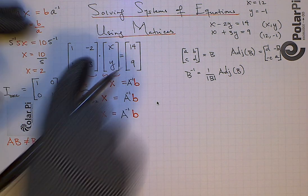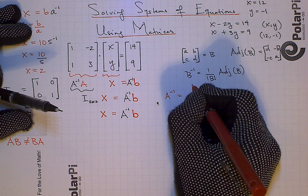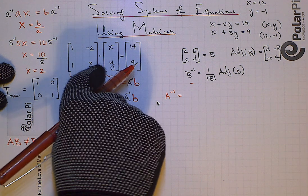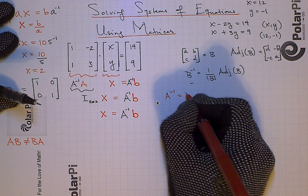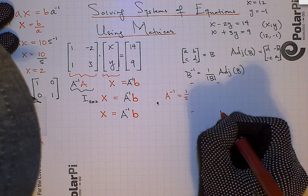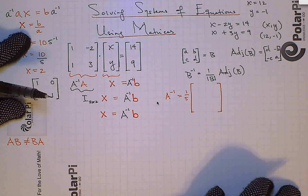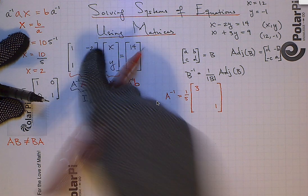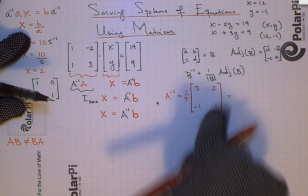So A inverse equals one over the determinant times the adjoint. The determinant here is one times three minus one times negative two, which is three minus negative two, so that's five. We'll have one divided by five times the adjoint of A. The adjoint of A in this particular case is swapping the places of three and one — so three comes to the top left and one comes to the bottom right — and then negating these: so we have positive two and negative one. So this equals one over five times that adjoint, which gives us A inverse.